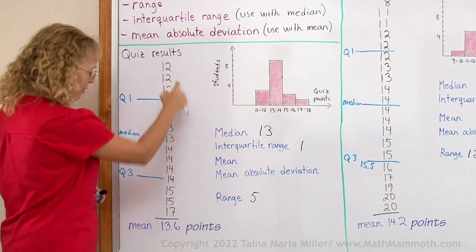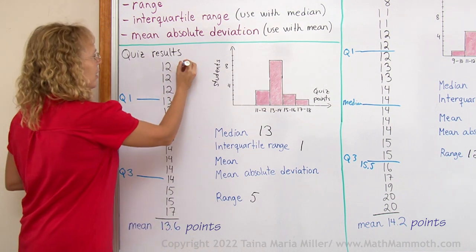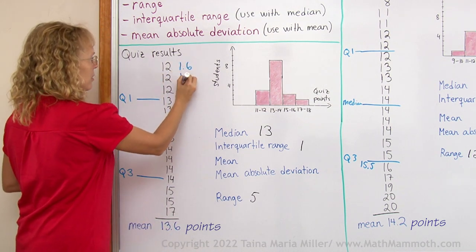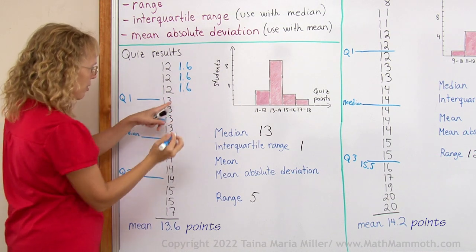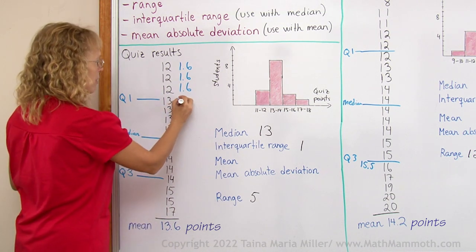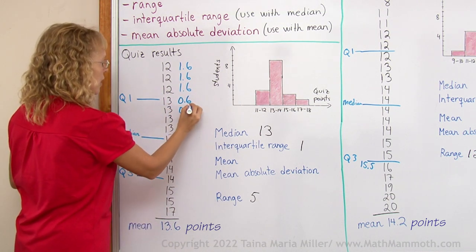So for example here, 12 and 13.6, they differ by 1.6, right? And then 13 and 13.6, the difference here is 0.6.